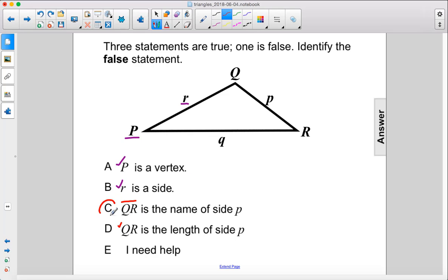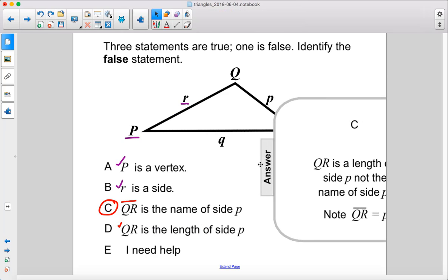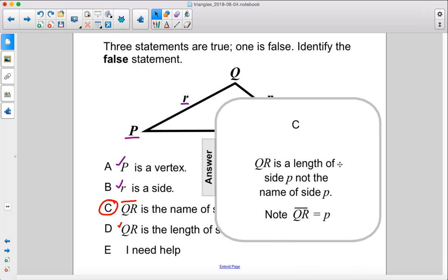So the answer here is C, because without this line segment bar, QR is just the length of it. QR is the length of side P, not the name. If you do have that line segment bar, that would be the name of side P.